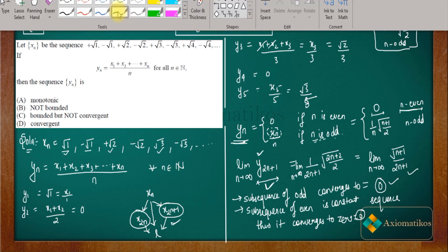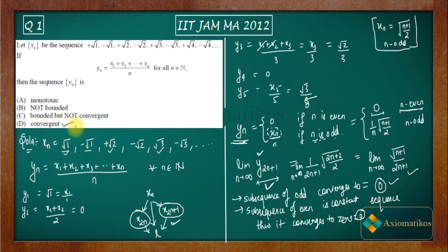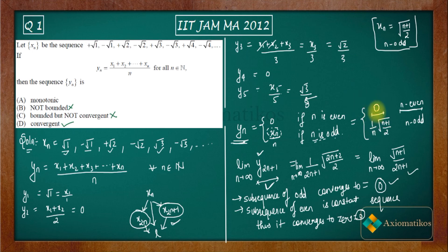Now let's check the options. Option D says 'not convergent' — that is incorrect. Option B says 'not bounded' — since every convergent sequence is bounded, B is also incorrect. For monotonicity: for every even n, yn = 0, and for every odd n, yn is some positive value, so the sequence oscillates between zero and positive values — going up, back to zero, up again. Therefore it cannot be monotonic. The correct answer is option D — convergent.